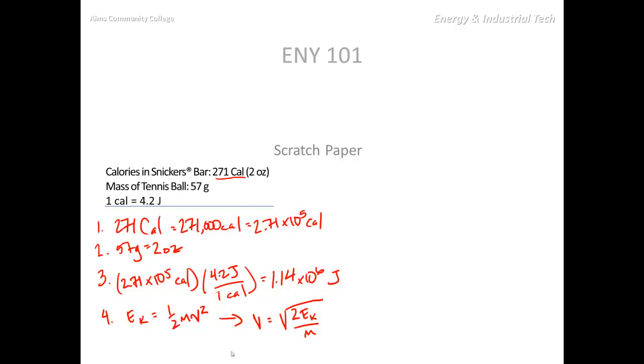By plugging in some numbers, let's do that now. So our velocity is equal to the square root of 2 times 1.14 times 10 to the 6 joules. That was our kinetic energy divided by the mass, which actually works out to 0.056 kilograms. That's really close to our 57. And we find that the velocity would have to be 6,375.7 meters per second.